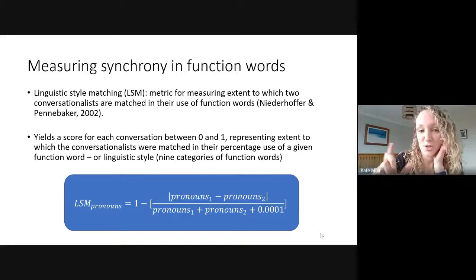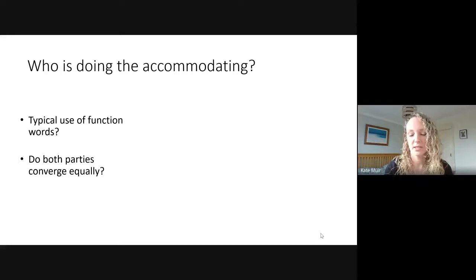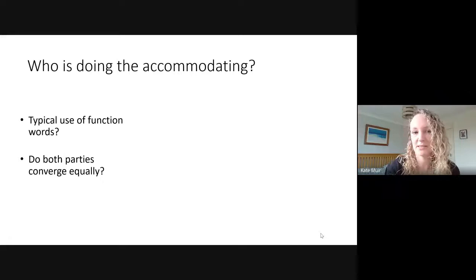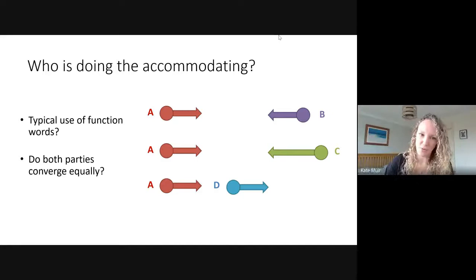The problem with the LSM metric is that it's a broad-stroke measure — it shows the extent to which two people are matched but doesn't show who's done the movement. It doesn't tell you whether someone has changed from their typical use of function words to be more like, or less like, the person they're talking to, or whether both parties have moved equally. You might get an LSM score showing both people are about the same, but it doesn't reveal if one person has moved massively from the way they normally talk.